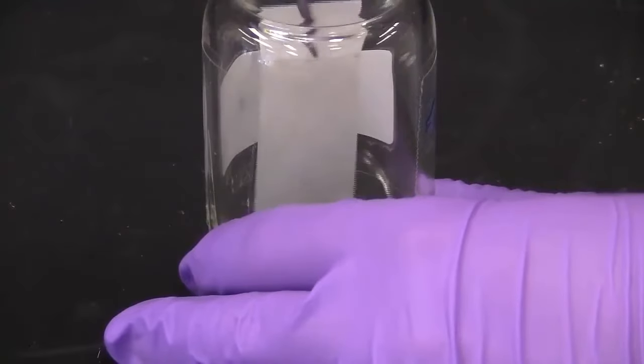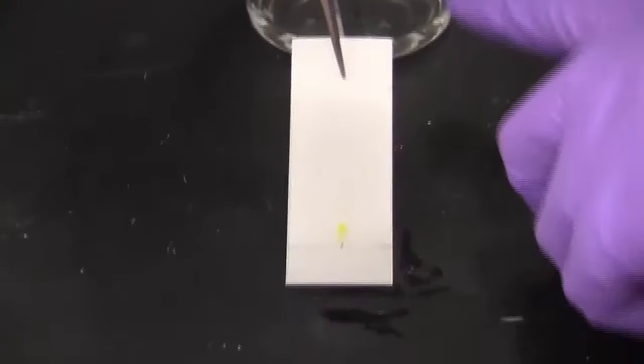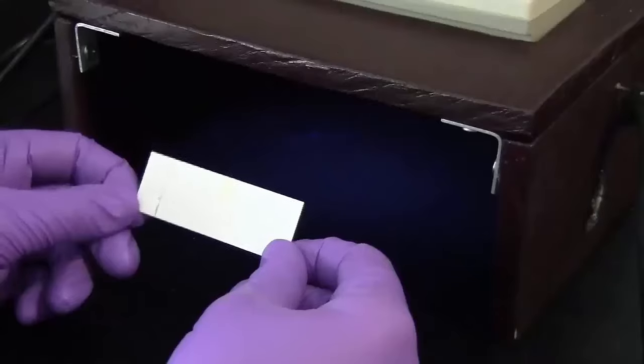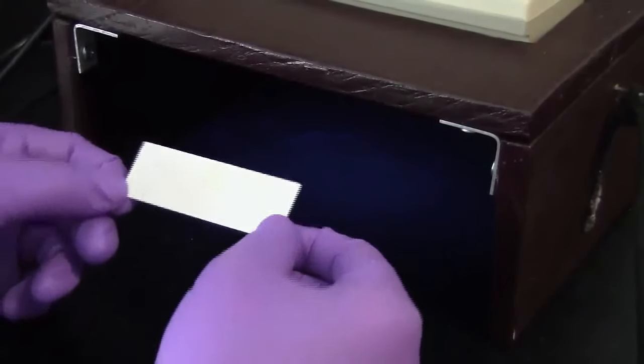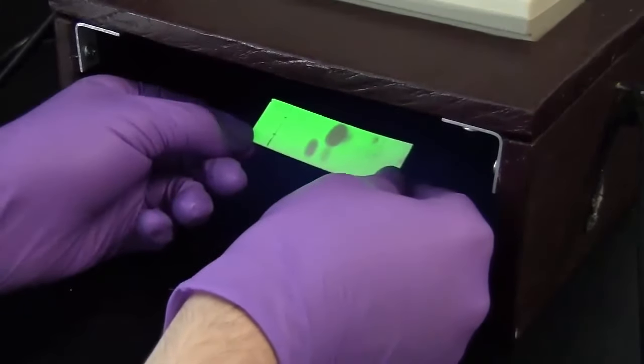Once the solvent line reaches the top line, remove the plate and set it on the bench top to dry. Note, if your sample is not colored, you will have to use a UV lamp to observe the spots.